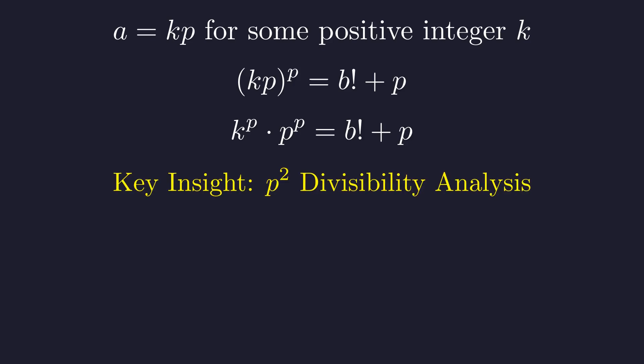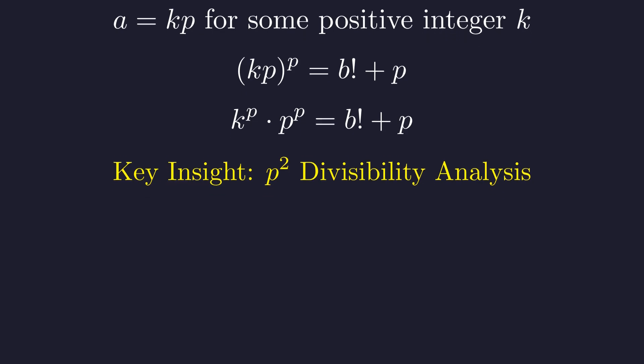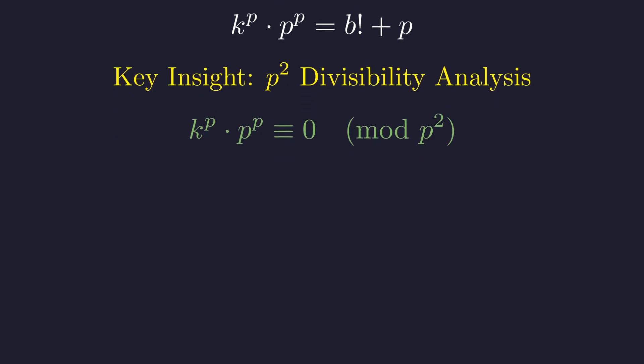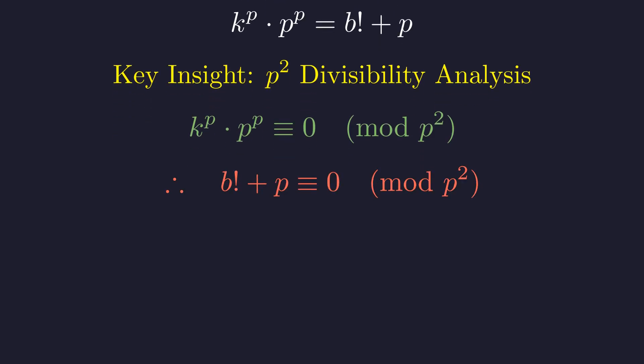Now comes a crucial insight. Let's analyze this equation with respect to divisibility by P squared. The left side, K to the power P times P to the power P, is always divisible by P squared for any P greater than or equal to 2, since P to the power P contains at least two factors of P. Therefore, the right side, B factorial plus P, must also be divisible by P squared.